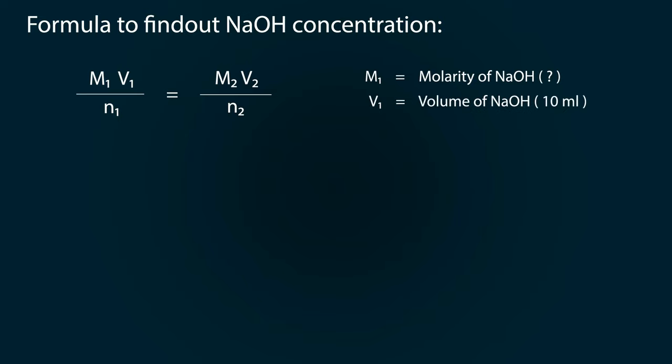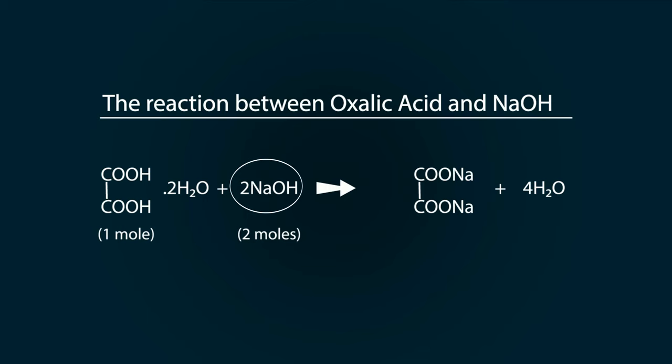v1 is the volume of NaOH solution used, which is 10 milliliters. n1 is the number of moles of NaOH, which is 2 moles - we got it from the reaction. You can see we use 2 moles of NaOH in this reaction.